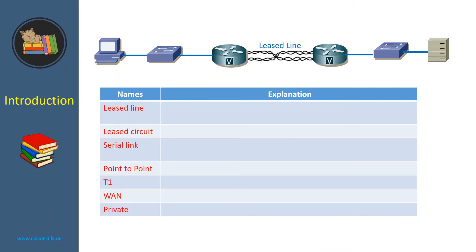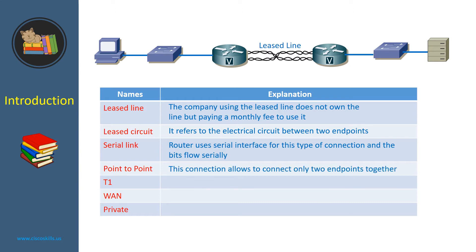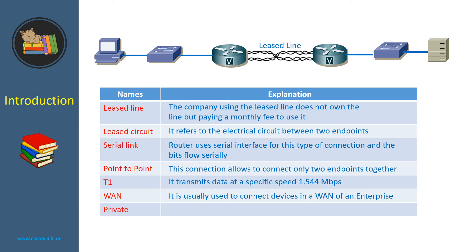The reason it is called Leased Line is because the company using the Leased Line does not own the line but pays a monthly fee to use it. Sometimes it is called Leased Circuit because it refers to the electrical circuit between two endpoints. As network engineers, we usually call it a serial link because the router uses a serial interface for this type of connection and the bits flow serially. We usually call it point-to-point because this connection allows connecting only two endpoints together. In the US, we usually call it T1 because it transmits data at a fixed speed of 1.5 megabits per second. We usually call it a WAN link because it is typically used to connect devices in a WAN of an enterprise. It is a private link because data sent over the line cannot be copied by other customers.